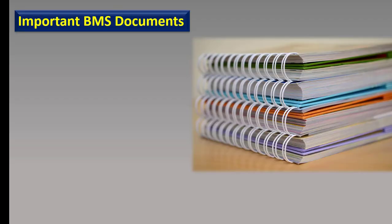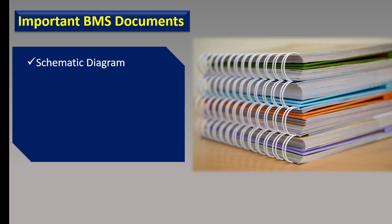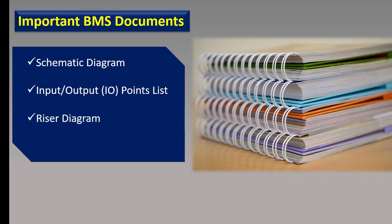We have the following important BMS documents which are used for the technical submittals and in the operation and maintenance manual. First of all, it is schematic diagram. Then we have input-output or IO points list. Then we have the riser diagram and also the bill of quantity or BOQ, which is very important for the technical submittal of BMS. Apart from the above, data sheets of the field devices and other equipment are also very important. In this video, we will talk about only schematic diagram and IO list.